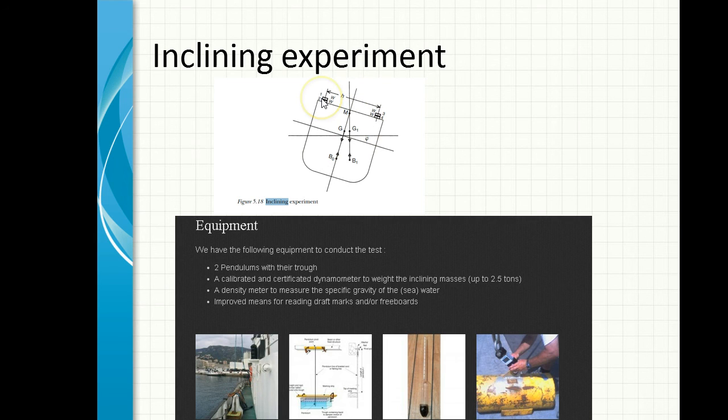Essentially what is done in an inclining experiment is two weights are moved across and with a pendulum, you check the angle of heel and there are calculations by which, because you know the form of the vessel, what is the position of GM, the metacenter. These are done over two, three sections in a closed water. What you see here is a pendulum here, which is what measures the angle of heel. And they are calibrated. There are standards for that. And the weights are moved, calibrated weights here, weights must be measured, kept and moved.